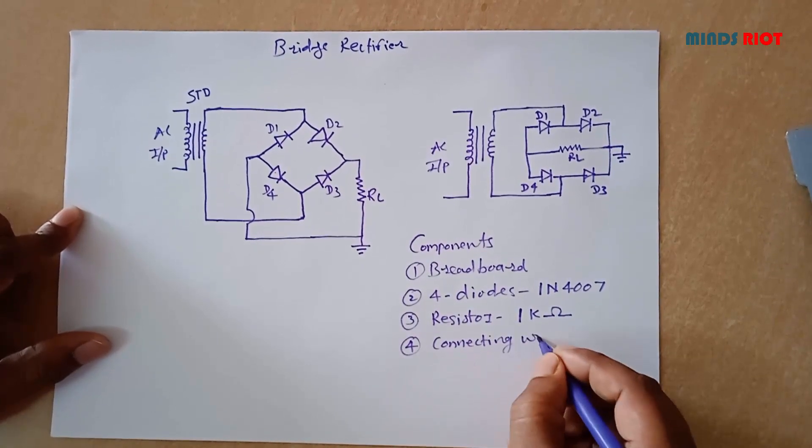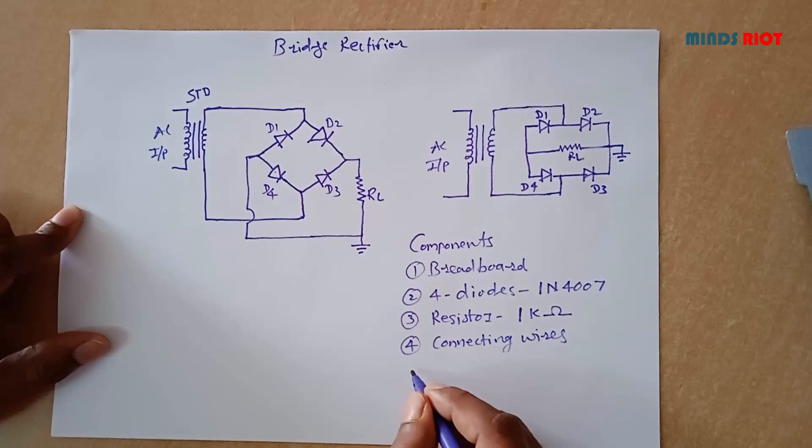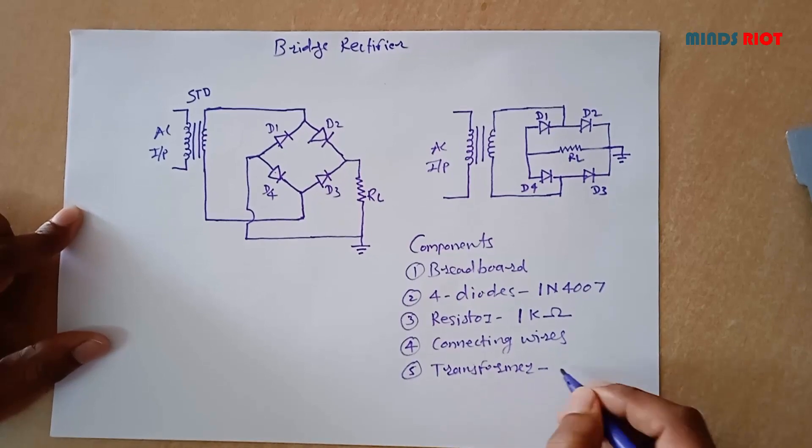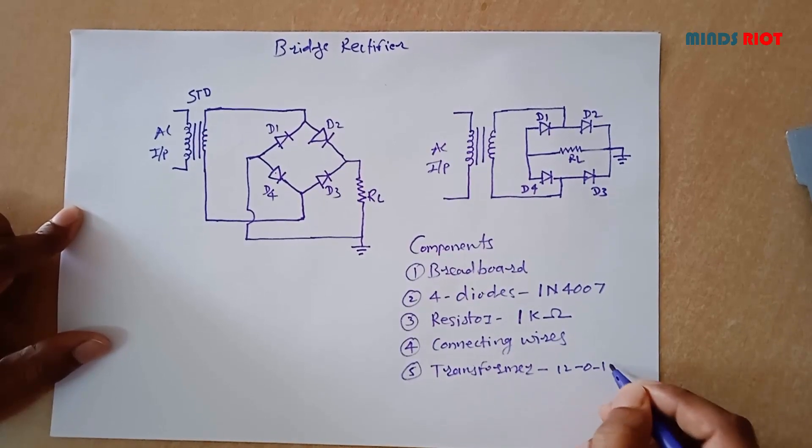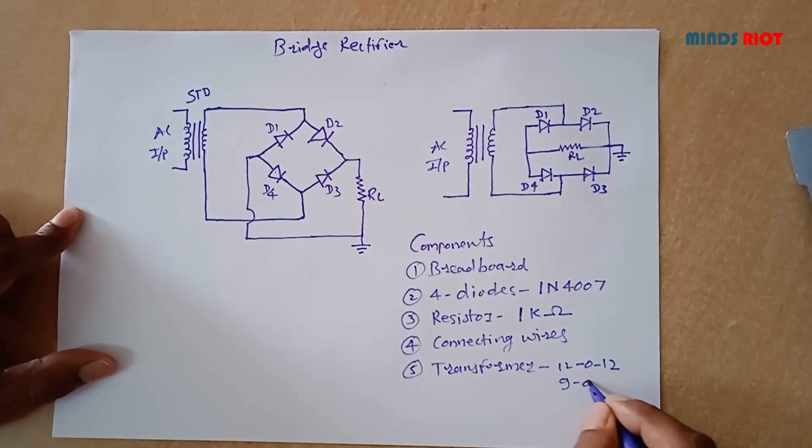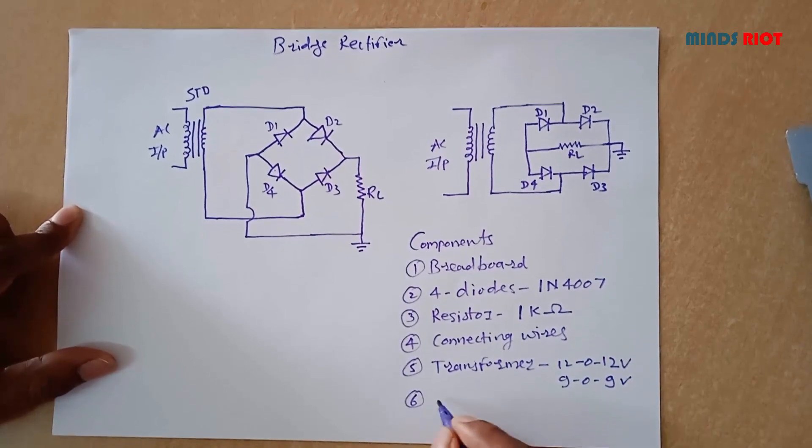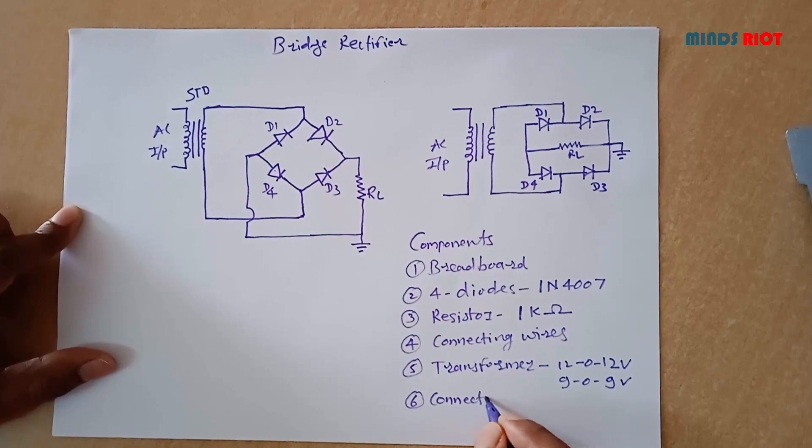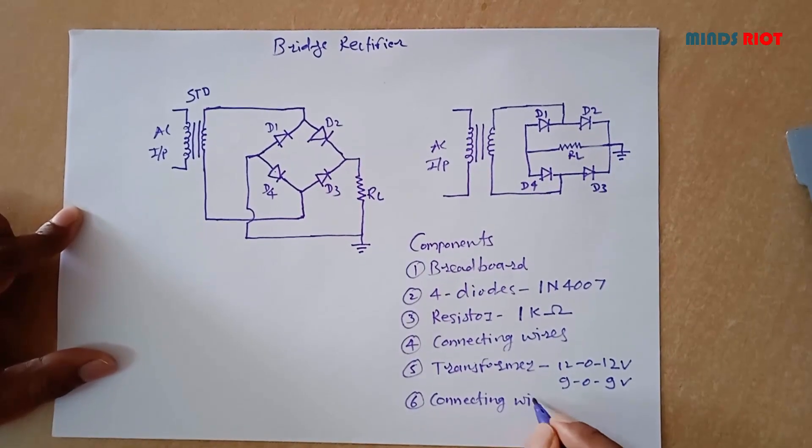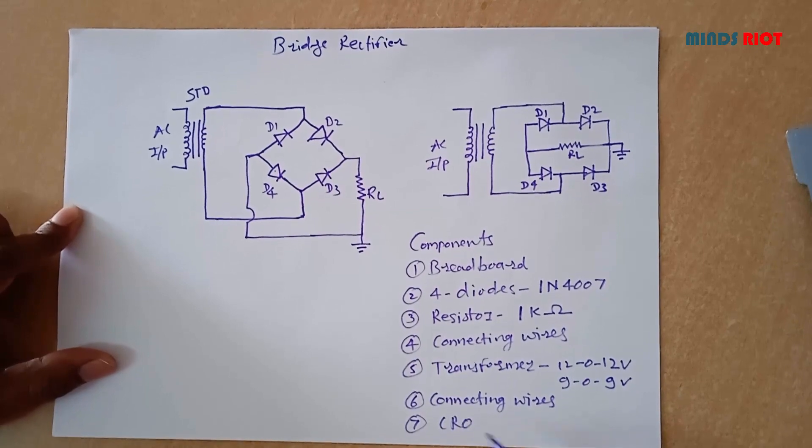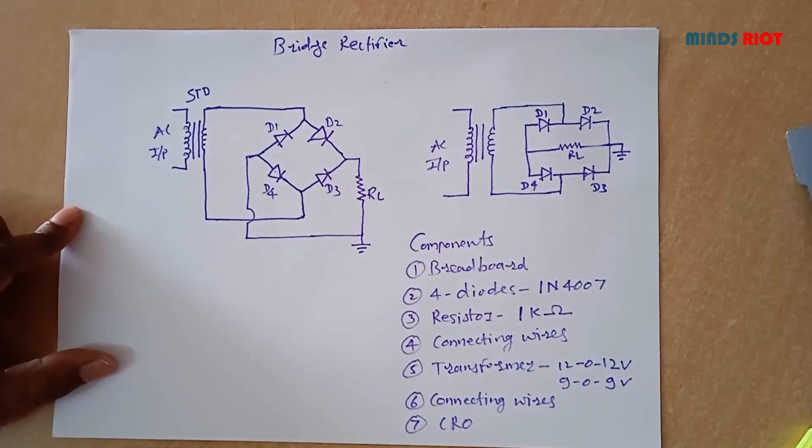Third, a resistor generally of 1K ohm. Then connecting wires, transformer of 12-0-12 or 9-0-9V step-down transformer, single strand connecting wires and CRO probes, and lastly CRO to observe the waveforms of bridge rectifier.